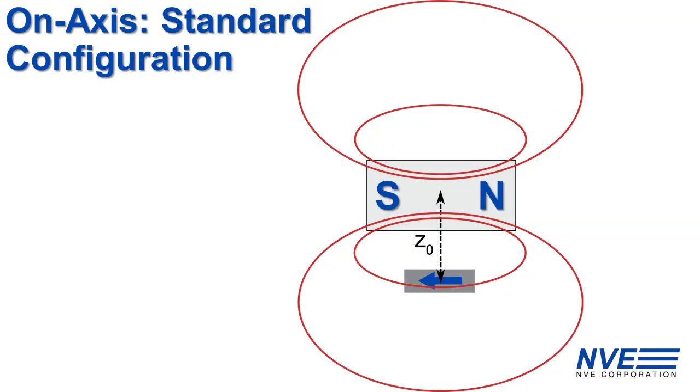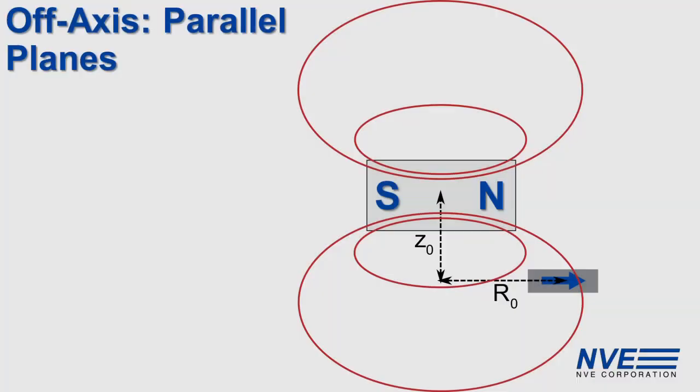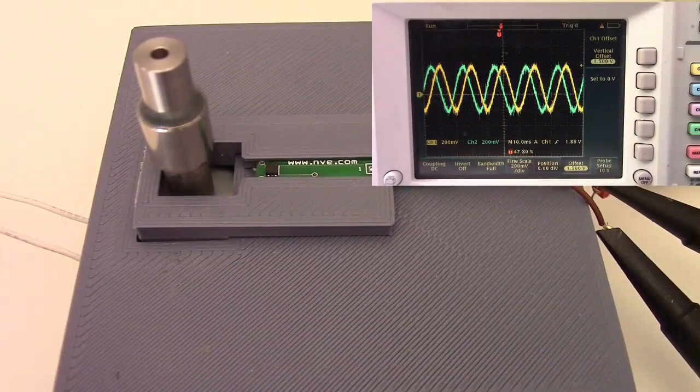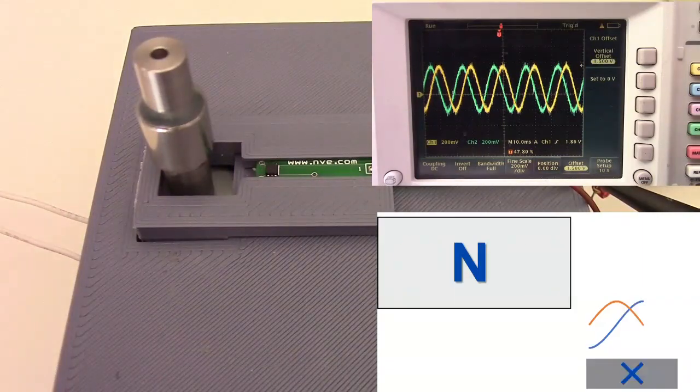The first off-axis configuration starts with the standard configuration, then moving the sensor off-axis a distance R0. You can see it works great, the sensor detecting the angle to high accuracy.